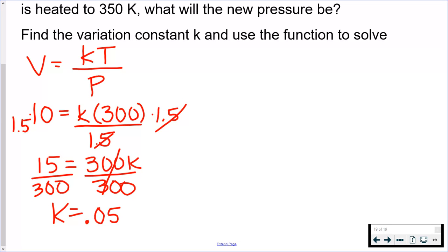Now I have my constant K. So I'm going to put that into my variation function that I found earlier. So now I could ask you anything about any particular gas, and you're going to use this function that I just wrote with the 0.05 as K.